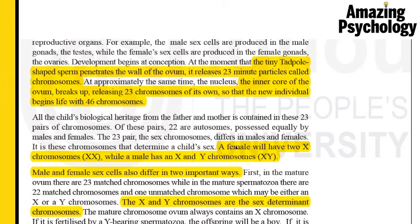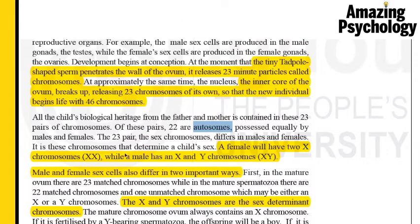The female will always have two X chromosomes, and the male will always have an X and Y chromosome. We have pairs of 23 chromosomes in a human being. Out of these, 22 will be autosomes, which are generic chromosomes, and the 23rd pair is the one which determines the sex of the child — represented by XX in the female and XY in the male.